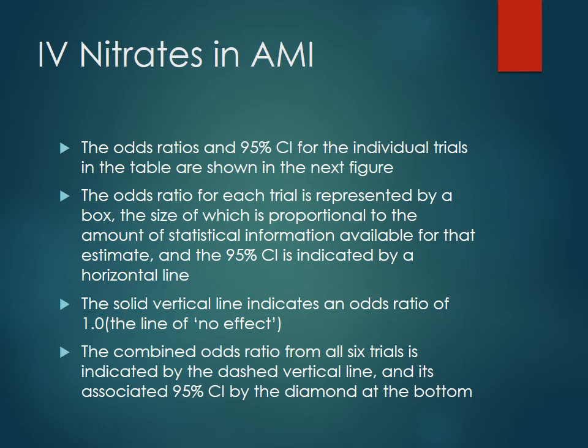What we can do in comparing these multiple trials together is plot them on a box and line graph. The odds ratio and 95% confidence interval for the individual trials are going to be shown on the next figure. The odds ratio for each trial is represented by a box — the size of the box is proportional to the amount of statistical information available, so more patients means a bigger trial and a bigger box. The 95% confidence interval is indicated by the horizontal line. The solid vertical line indicates the odds ratio of one — the line of no effect. If the confidence interval crosses one, it's considered a non-significant trial. You can then combine all the odds ratios from all six trials into one pooled estimate with its own 95% confidence interval.